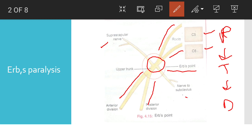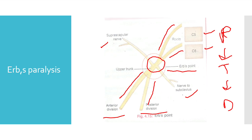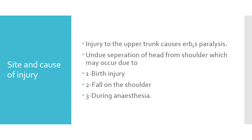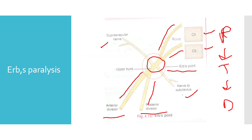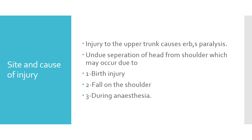At this point, the nerves present include the suprascapular nerve and the nerve to subclavius. If you have an injury at Erb's point, we say that the patient has Erb's paralysis. The site of injury is the upper trunk, which we call Erb's point. So injury to the upper trunk causes Erb's paralysis.